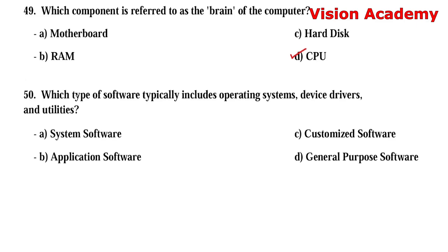Question number 50: Which type of software typically includes operating system, device drivers, and utilities? Option A: system software. Option B: application software. Option C: customized software. Option D: general purpose software. The right answer is Option A, system software.